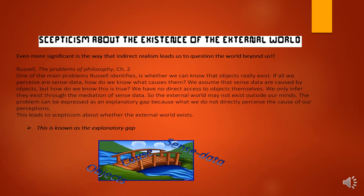The external world may not exist outside our minds. The problem can be expressed as an explanatory gap, because we do not directly perceive the cause of our perceptions, and this leads to scepticism about whether the external world exists. All we've got is this sense data, and we infer that this sense data is caused by objects beyond our minds — but we don't know. There's an explanatory gap.